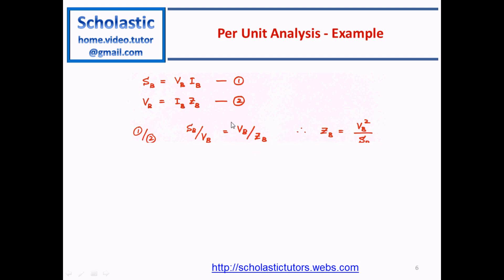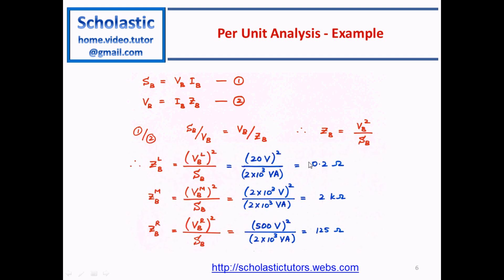Now we calculate ZB for each section of the circuit. For the left section: ZBL equals VBL² divided by SB — that is 20² divided by 2×10³ — which gives 0.2 ohms. Similarly, the middle section gives 2 kilo-ohms, and the right section gives 125 ohms. We use these base values to normalize the components of the circuit.